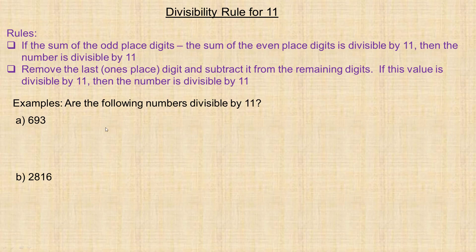The second way is to remove the last digit — the ones place — and subtract it from the remaining digits. If that value is divisible by 11, then the number is divisible by 11.